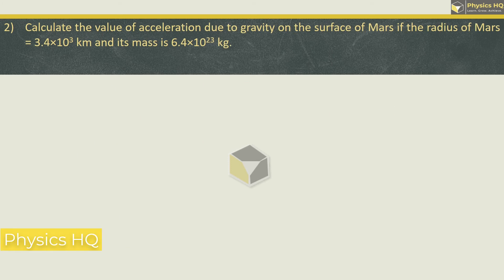If the radius of Mars is 3.4 × 10³ kilometers and its mass is 6.4 × 10²³ kg, acceleration due to gravity is given by GM/r². So here, G value is 6.67 × 10⁻¹¹, mass of Mars is 6.4 × 10²³, divided by the radius 3.4 × 10⁶ meters.